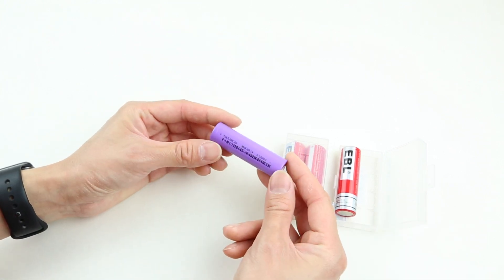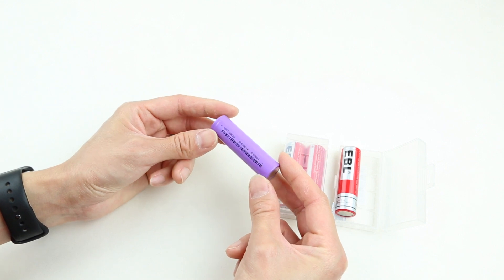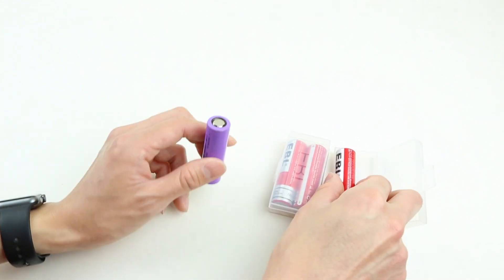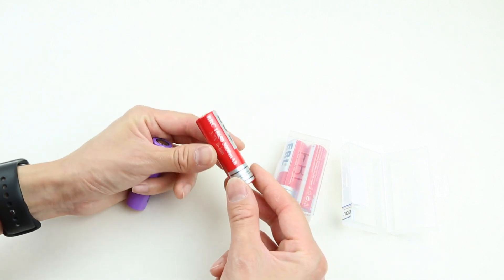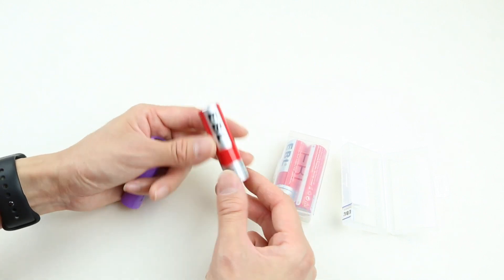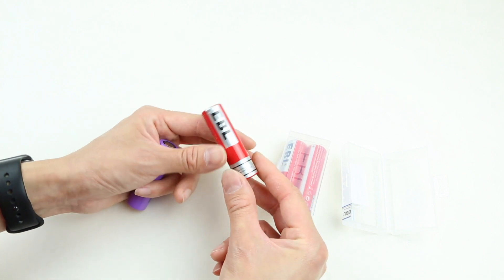And if you kind of look closer here, there's not even a capacity mAh reading stamped on here. So if you need some replacement 18650 cells for your headlamps or portable fans, or even some RC cars, definitely check out the EBL link down below.